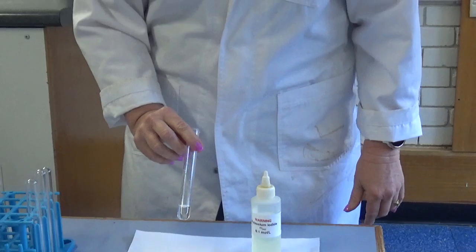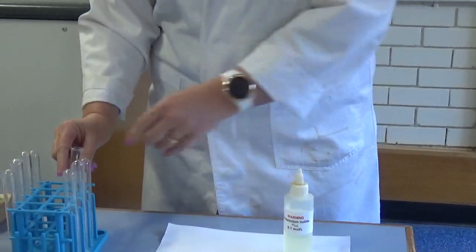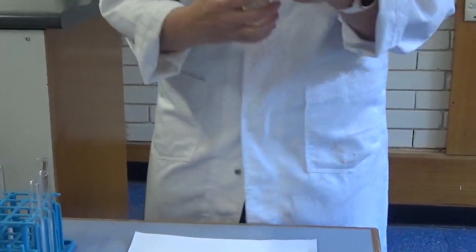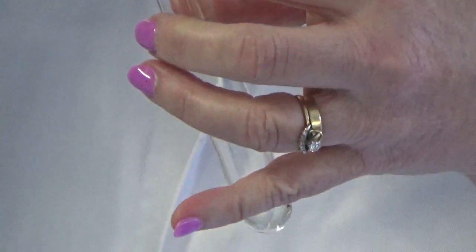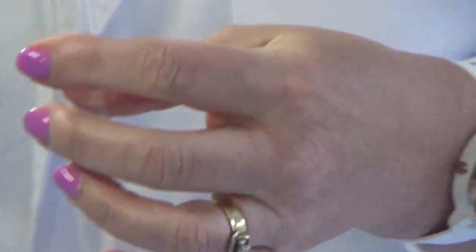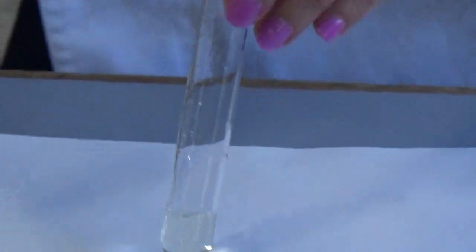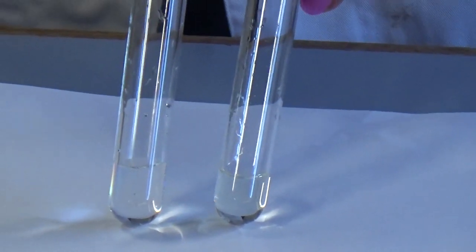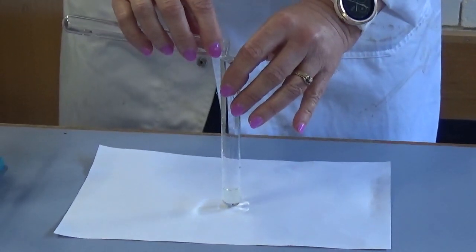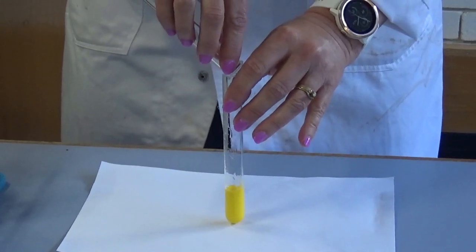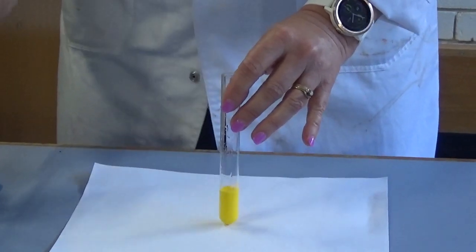So I'm going to put some lead nitrate into a test tube. You can see that the lead nitrate is a colourless solution. Now I'm going to put some potassium iodide into a different test tube and you can see that's colourless, it's kind of a little bit yellow. Now I'm going to pour these two solutions together and watch what happens.